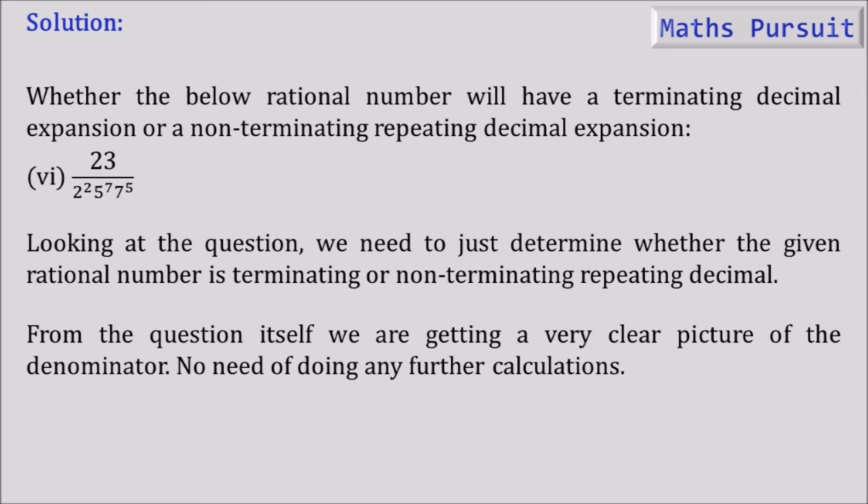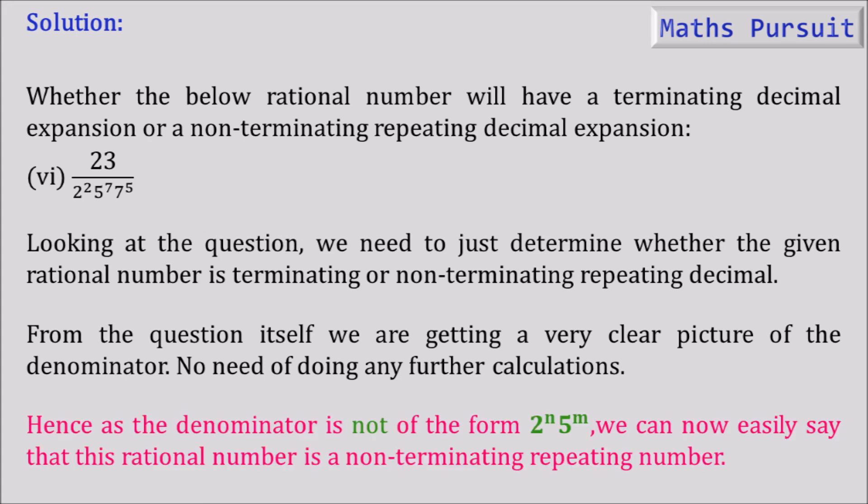Looking at this denominator, we have 2 to the power 2 and 5 to the power 7, but we also have one extra number: 7 to the power 5. Since the denominator is not purely of the form 2^n × 5^m — it contains the extra factor 7 to the power 5 — we can easily conclude that this rational number is a non-terminating repeating decimal.